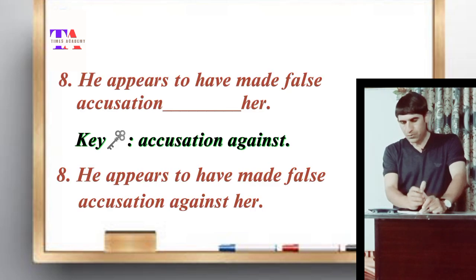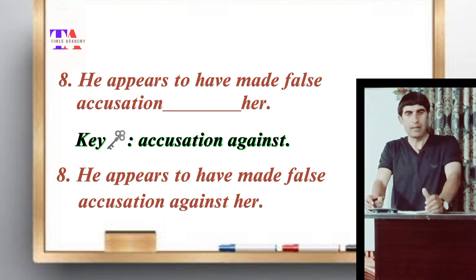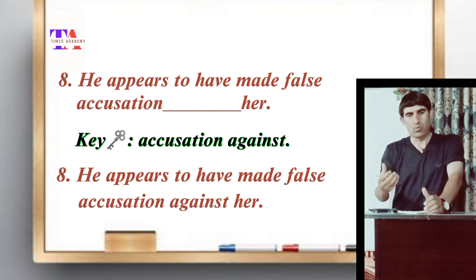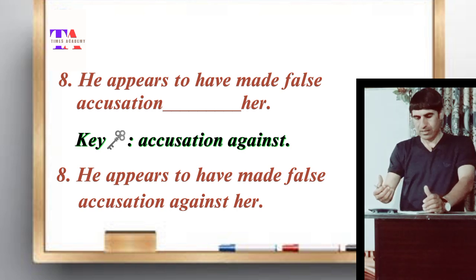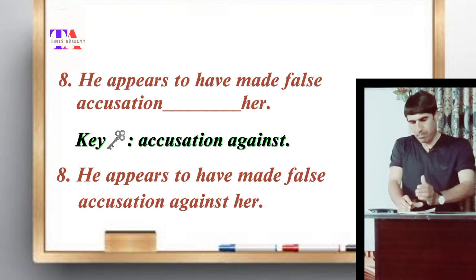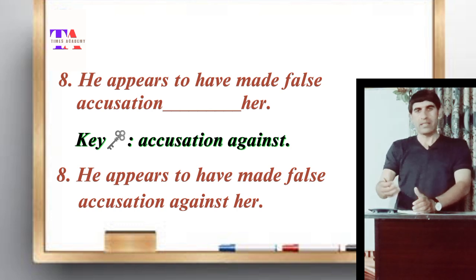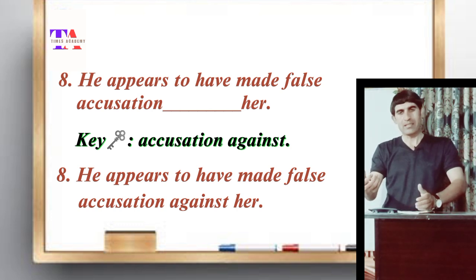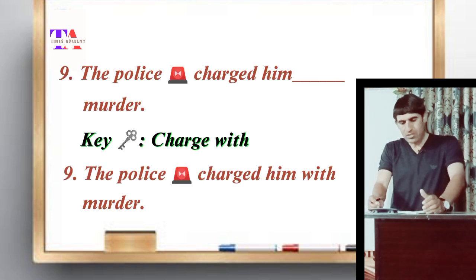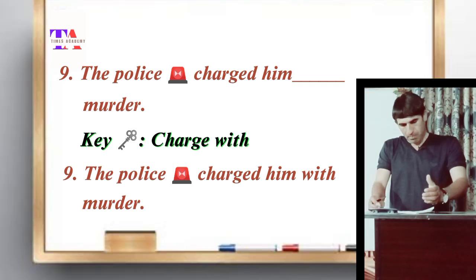Sentence number eight: 'He appears to have made false accusations against her.' In this sentence the word 'accusation' has been used as a noun, so it takes the preposition 'against'. The sentence is: he appears to have made false accusations against her. The noun 'accusation' takes the preposition 'against'.